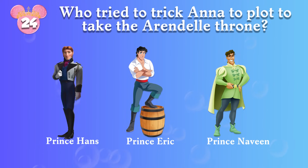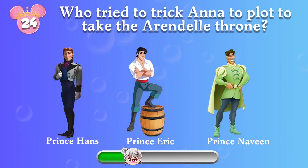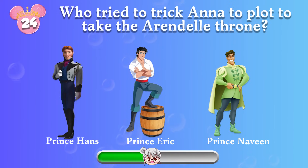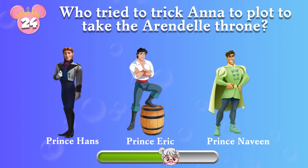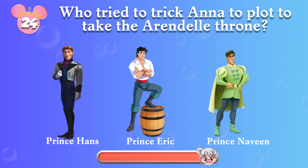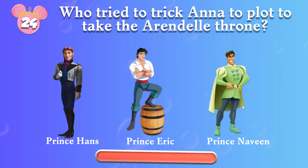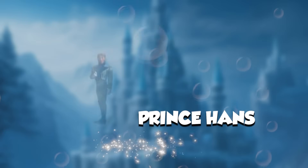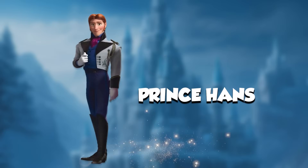Round 24: Who tried to trick Anna to plot to take the Arendelle throne? He is Prince Hans!